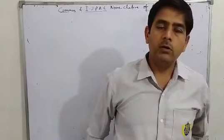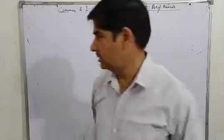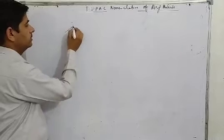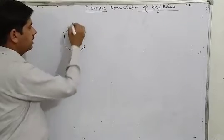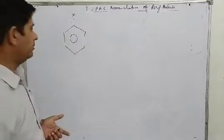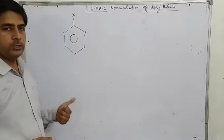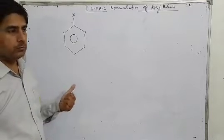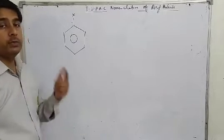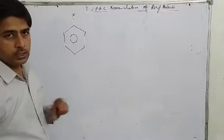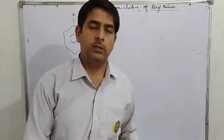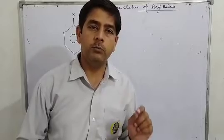Now if we do nomenclature of aromatic compounds using the IUPAC system: when there is only one halogen, no problem — it will be called chlorobenzene, bromobenzene, or iodobenzene. But if there are two halogens, we use numbering. In the IUPAC system we do not use ortho, para, or meta — we use only numbering: 1, 2, 3, 4, 5.